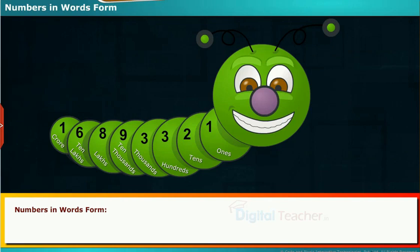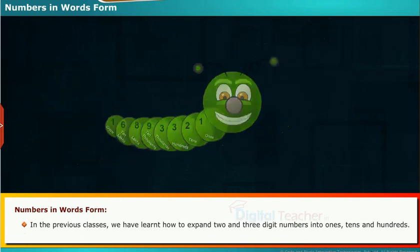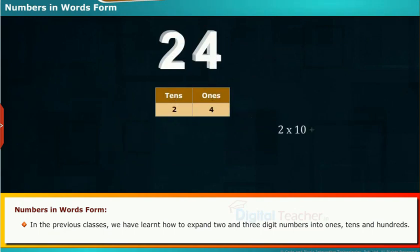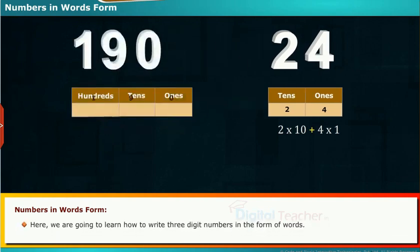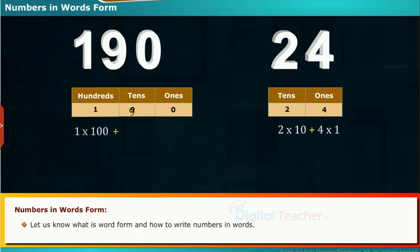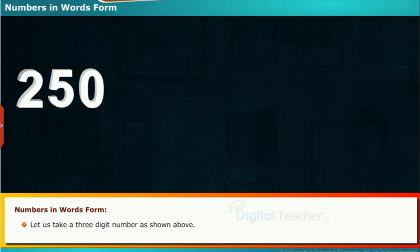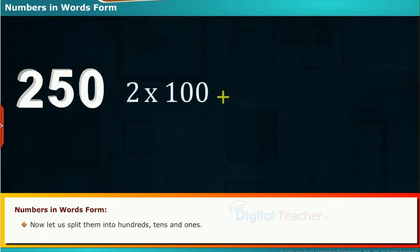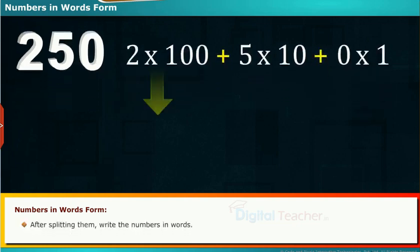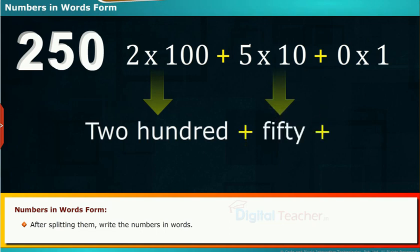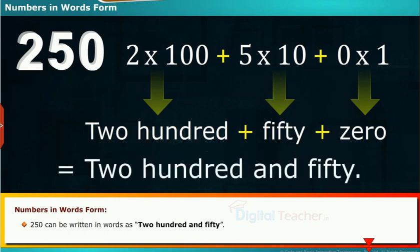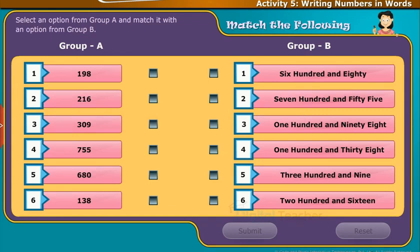Let us learn how to write numbers in word form. In the previous classes we have learned how to expand 2 and 3 digit numbers into 1s, 10s and 100s. Here we are going to learn how to write 3 digit numbers in the form of words. Take a 3 digit number, split it into 100s, 10s and 1s, then write the numbers in words. For example, 250 can be written in words as two hundred and fifty. Let us perform an activity on writing numbers in words.